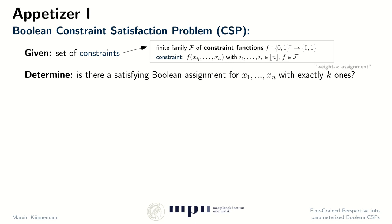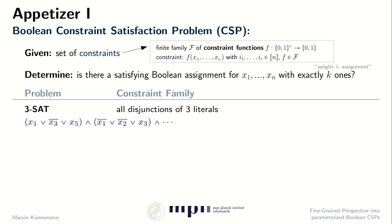What kinds of constraints do we consider? We consider a finite constraint family f of constraint functions. These are Boolean functions of some bounded arity r. We are allowed to form a constraint by taking some function f from this constraint family and plugging in an arbitrary subset of our Boolean variables into the inputs. A classic example would be the 3-SAT problem, where the task is to satisfy a number of clauses simultaneously, where each clause is a disjunction of three literals. Here our constraint family would consist of all ternary functions that have a single falsifying assignment.